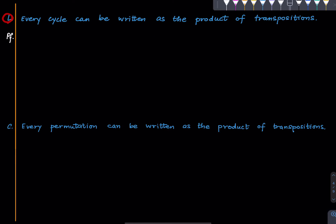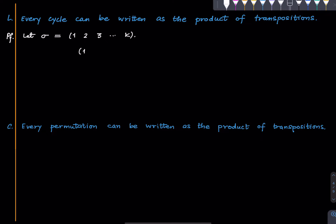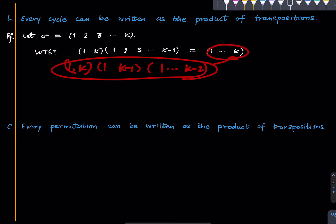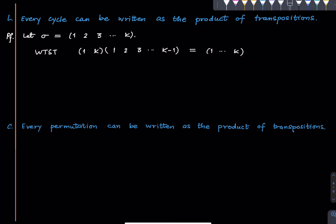This is a lemma which we saw as an example earlier: every cycle can be written as the product of transpositions. Let sigma be a particular k-cycle. If we can prove it for this cycle we can do it for any k-cycle. What we want to show is that the k-cycle (1, 2, ..., k) equals a product of transpositions. Once we do this, we can keep iterating the same thing, each time shortening the cycle and introducing a new transposition. This is the heart of the matter.